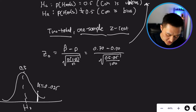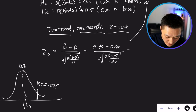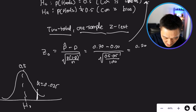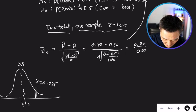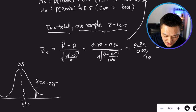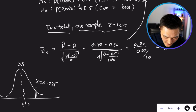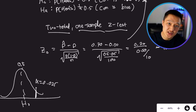Simplifying the expression, we get 0.20 on the top and 0.50 divided by 10 in the denominator, which simplifies to a Z-naught of 4.0. Now, how do we evaluate whether 4.0 is statistically significant?